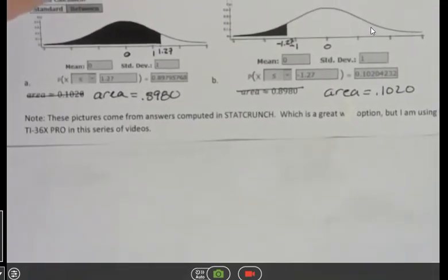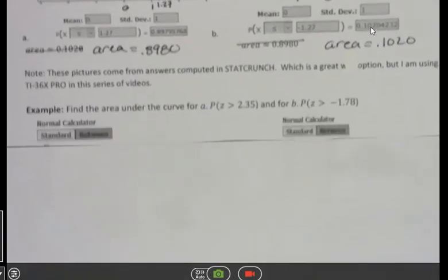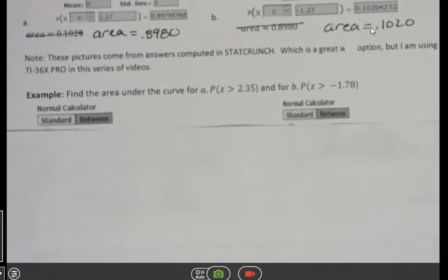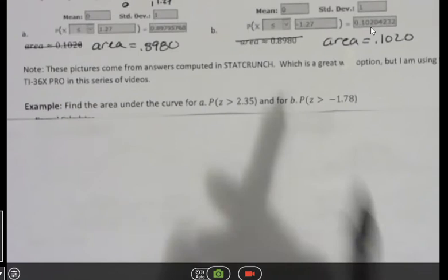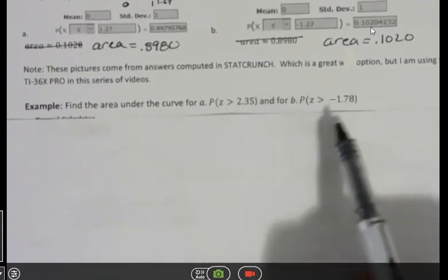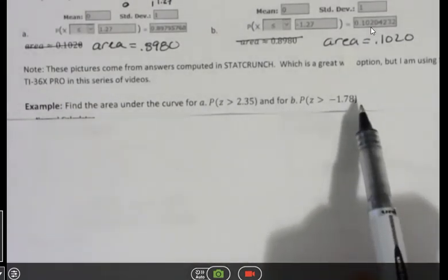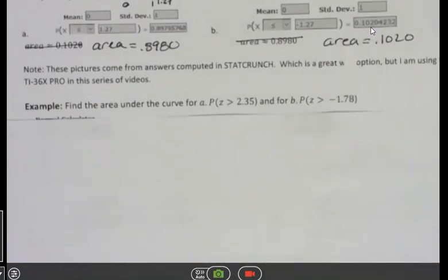These pictures I did in StatCrunch, but I'm using TI-36X Pro for these videos. The next one says, find the area under the curve. For the first one, z is greater than 2.35. And the second one, z is greater than negative 1.78. So now we're looking to the right instead of the left as we did in the other.